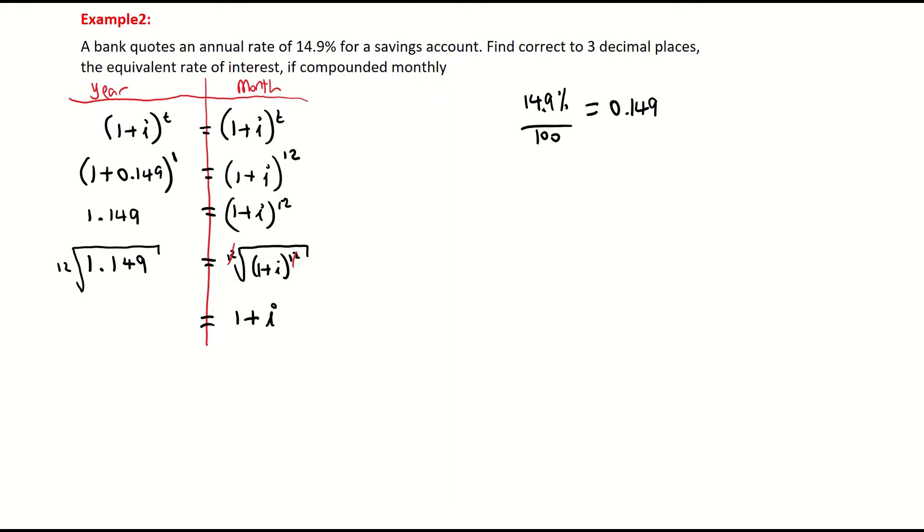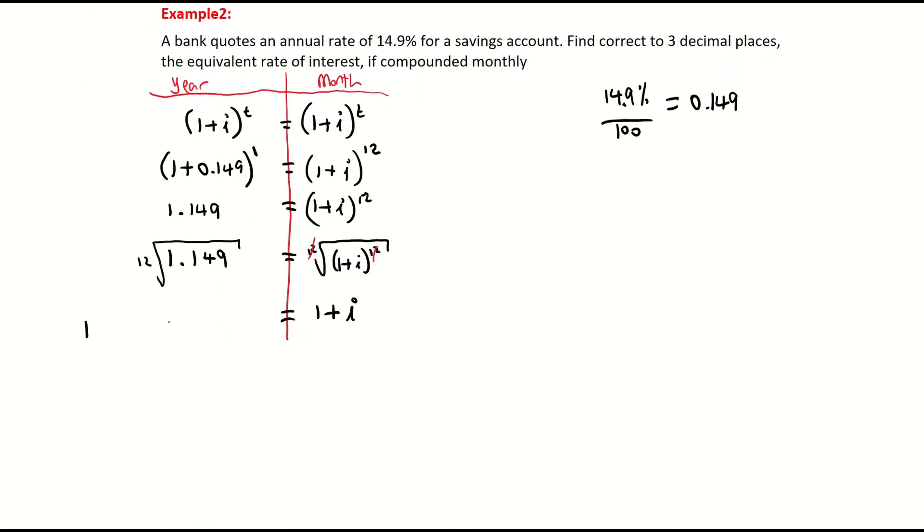And then my year, when I find the 12th root of 1.149, I get 1.011642. So that's the 12th root of 1.149. I'm going to subtract 1 from each side or move over the 1. So that's giving me 1.011642 subtract 1 equals i. And when I take away the 1, it gives me 0.011642 equals i.